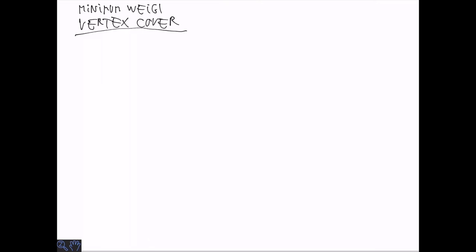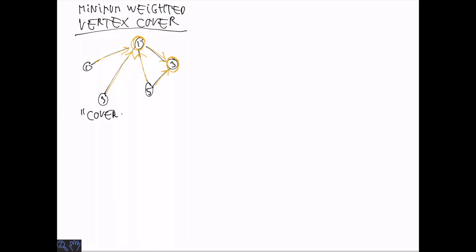Our first case study is the vertex cover problem—more specifically, the minimum weighted vertex cover problem. We have a graph with weights on each node and edges connecting the vertices. The goal is to select a subset of the vertices such that every edge touches one of the selected vertices, i.e., we cover all edges. In this example, the vertex cover consisting of two nodes has a total cost of four.